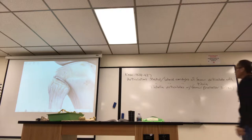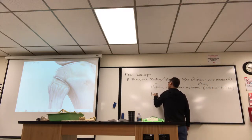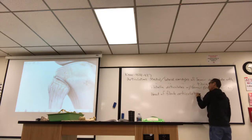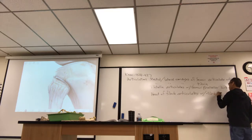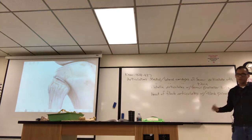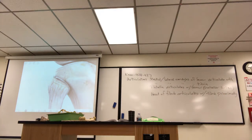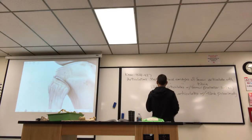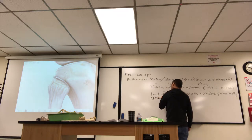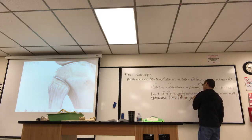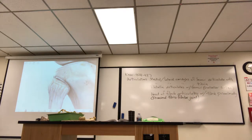The fibula articulates with the tibia proximally. Because if you go down to the ankle, there's an articulation there too, but this one is called the proximal tibial fibular joint. It's technically part of the knee region.